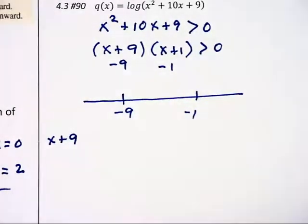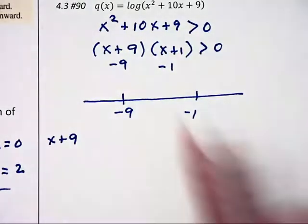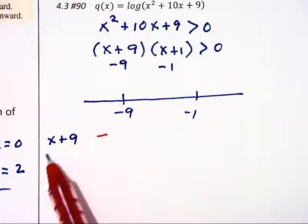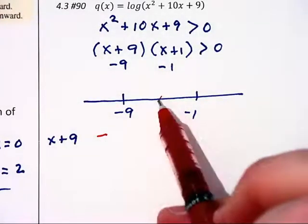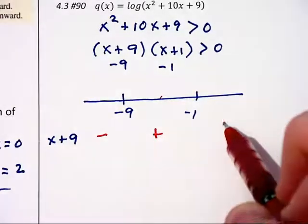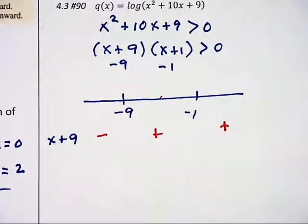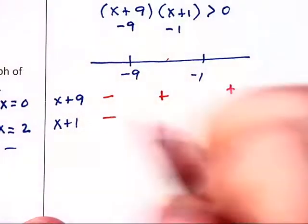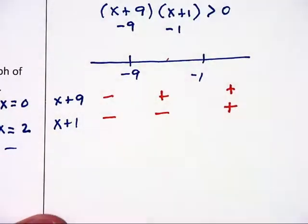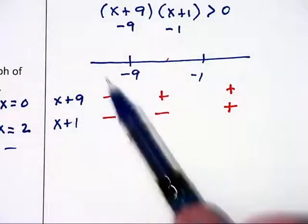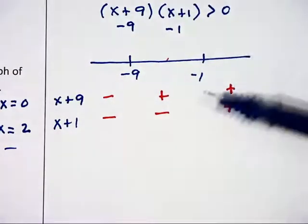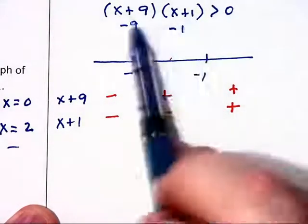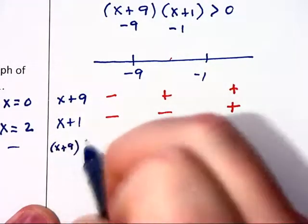For example, let's look at the x plus 9 interval. Numbers to the left of negative 9 are going to produce negative numbers when substituted into x plus 9. For example, negative 10 plus that 9 makes negative 1. Numbers in the middle, such as 0, 0 plus 9 makes positive 9. And numbers off to the right here will be positive also. Let's substitute values into x plus 1. Now we're going to have negative values in the first two intervals and a positive value off to the right of negative 1. So anytime we choose a number in any of these three intervals, we can see what will the sign be when you add 9 and add 1.